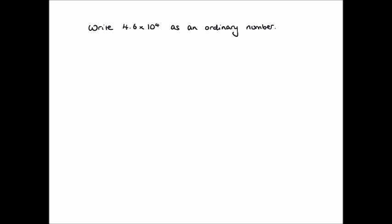Let's say we want to know what 4.6 times 10 to the power of 4 is as an ordinary number. To do this we simply evaluate the calculation. Let's think about what 10 to the power of 4 is: it's 10 times 10 times 10 times 10, which equals 10,000. Notice that 10 to the power of 4 gives us a 1 followed by 4 zeros. So 4.6 times 10 to the power of 4 is the same as 4.6 times 10,000. To multiply by 10,000, we need to move the digits in 4.6 to the left 4 spaces.